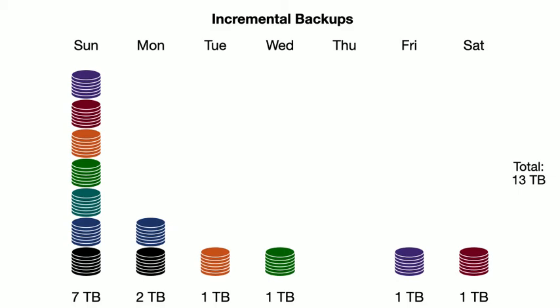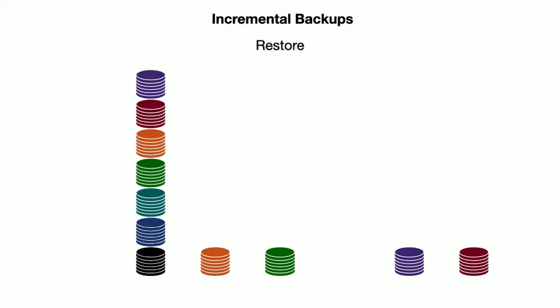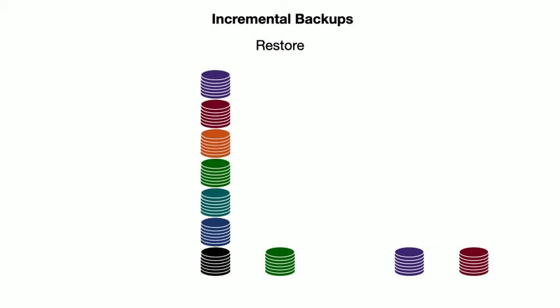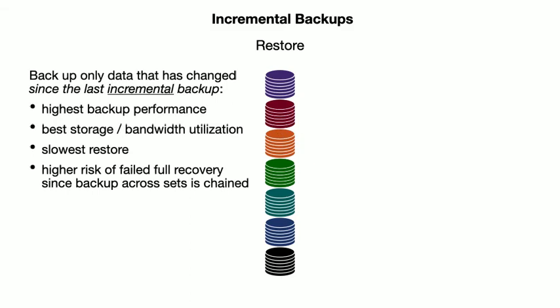But what does this mean when we want to restore? In this model, when we want to restore data, we have to start with the full backup from Sunday, then overlay the data from Monday, then Tuesday, then Wednesday, Friday, and finally Saturday. The difference to the previous two approaches is that we maximize backup performance and minimize storage needs, since we really only copy the minimal amount of data — but that comes with a penalty of a much more complex restore process. This also somewhat increases the probability of a failed restore, as our complete restore now depends on the full chain of all previous backups. Once again, there is no free lunch, and there is no simple correct solution, but it's important to understand these different approaches.